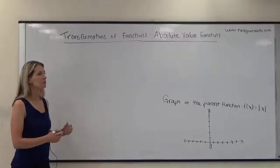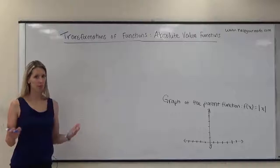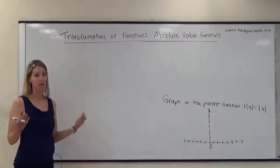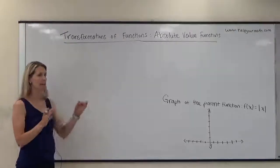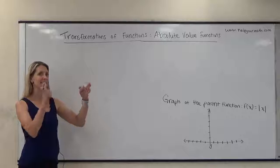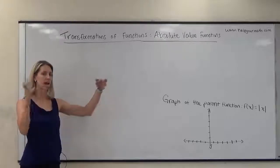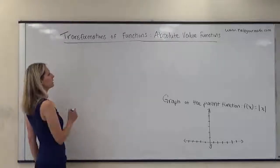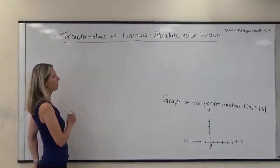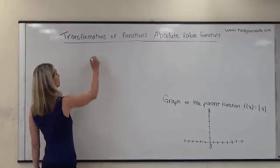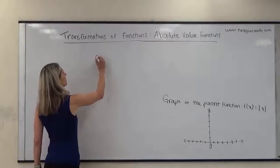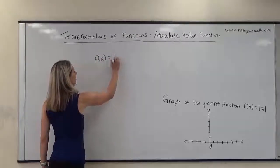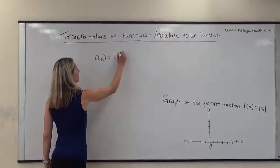An absolute value function is a function that has what's called a parent function. The parent function is like the basis of that entire function family, and the basis of the entire absolute value function family is f(x) = |x|.